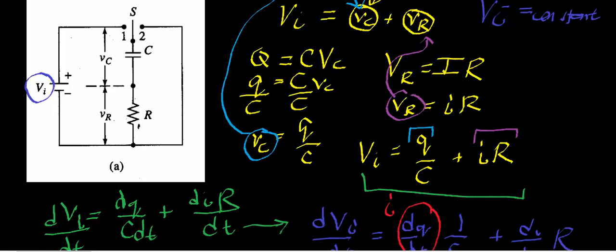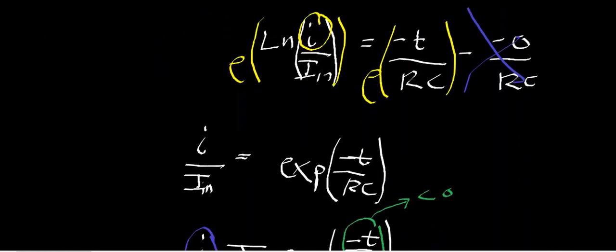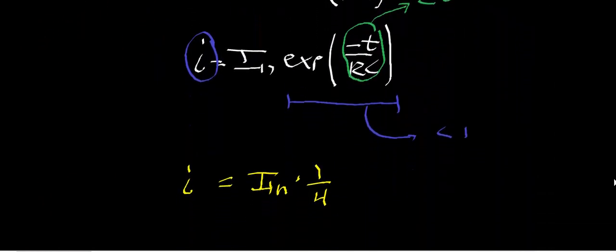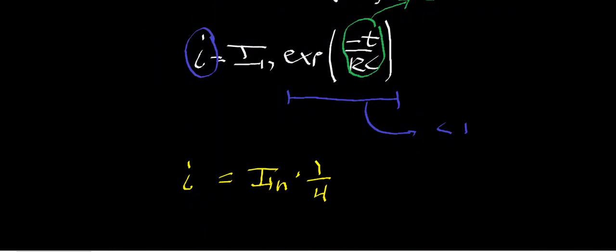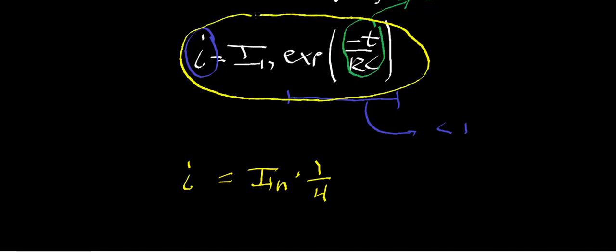The key takeaway is that the current in an RC circuit exponentially decays with time. Memorize this formula: i equals I_initial times e to the negative t/RC. The argument of the exponential is always negative, so the instantaneous current is always smaller than the initial current at any time after zero. I hope this video helped — see you in the next one.